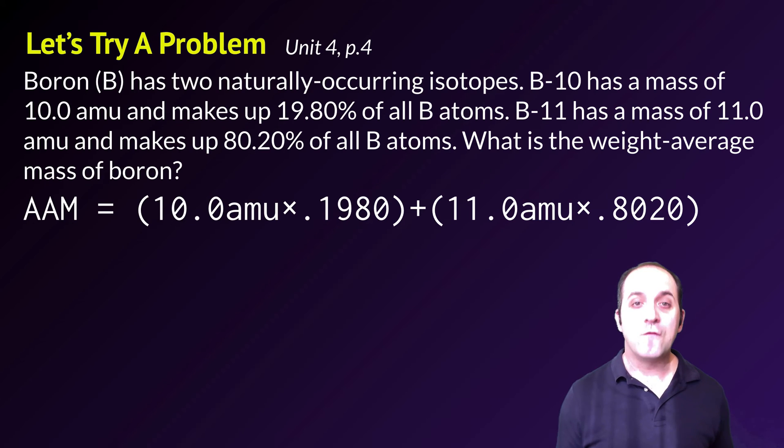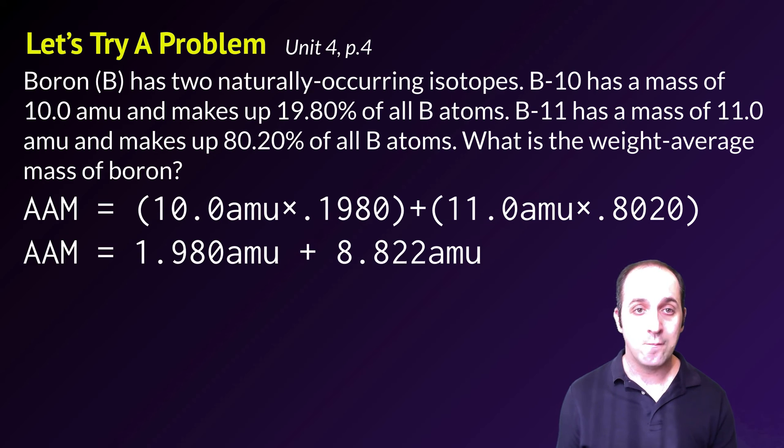So we're just going to take the mass of the first isotope, which is 10.0 atomic mass units, and we're going to multiply it by its percent abundance, which I've turned into a decimal by dividing it by 100 to turn it into 0.1980. And then to that product, I'm going to add the product of 11.0 atomic mass units or the mass of the second isotope times its percent abundance 0.8020. Again, turned into decimal form.